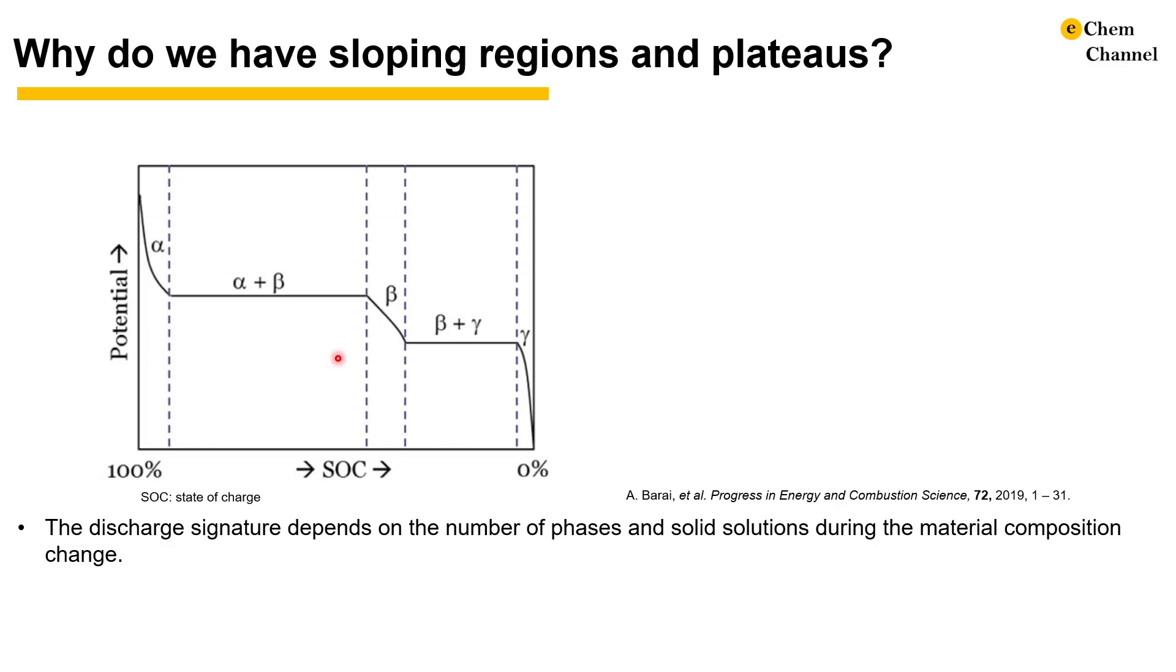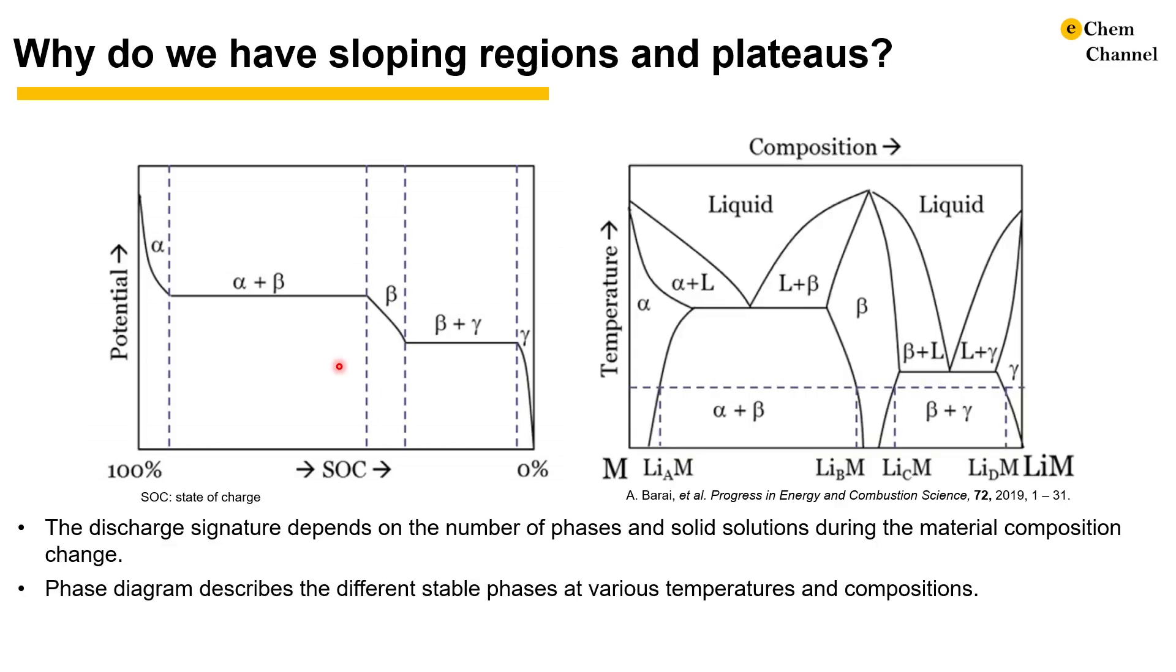As labeled in the graph, in the sloping regions, there are only one phase: alpha, beta, or gamma. In the plateau regions, there are two coexisting phases. In the hypothetical phase diagram, this process is presented as the dashed line.